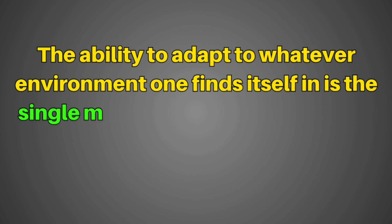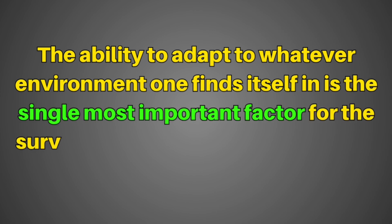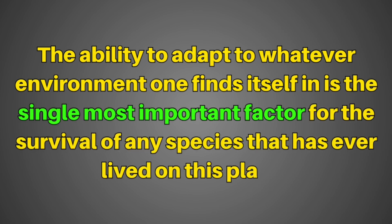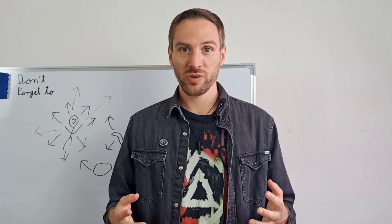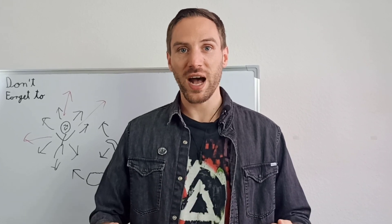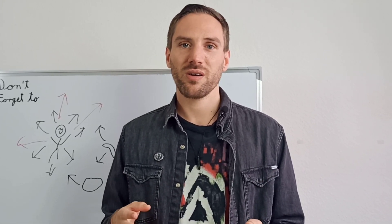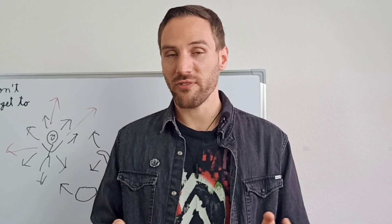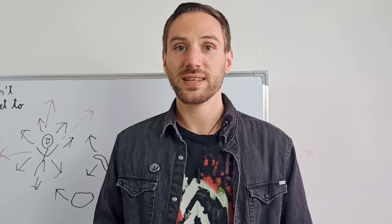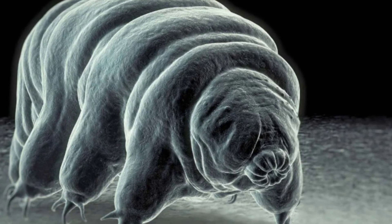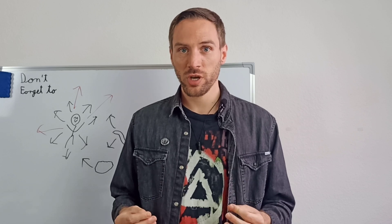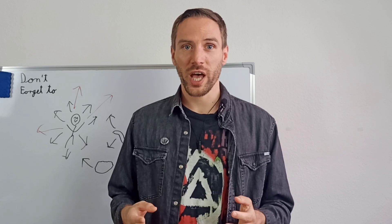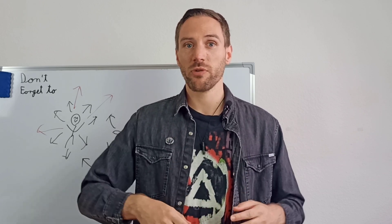The ability to adapt to whatever environment one finds itself in is the single most important factor for the survival of any species that has ever lived on this planet. By this definition, humans would look pretty good because we have great adaptability across a vast range of different environments. But you know what other organism has great survival skills across a vast range of environments? A tardigrade — yes, they survive even in space. So while I really like this definition, no reasonable being would consider a tardigrade on an intelligence level with a human.